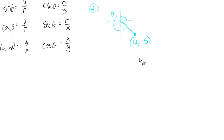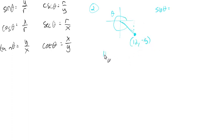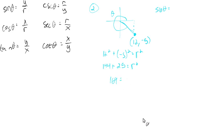They want us to find the six trig values — sine, cosine, and so on. Sine is y over r, so now we need to find r. We can think of r as part of this triangle: x squared plus y squared equals r squared, so 12 squared plus negative 5 squared equals r squared. That's 144 plus 25 — when you square negative 5 you still get a positive 25 — equals r squared. 144 plus 25 is 169, and the square root of 169 is 13, so r is 13.